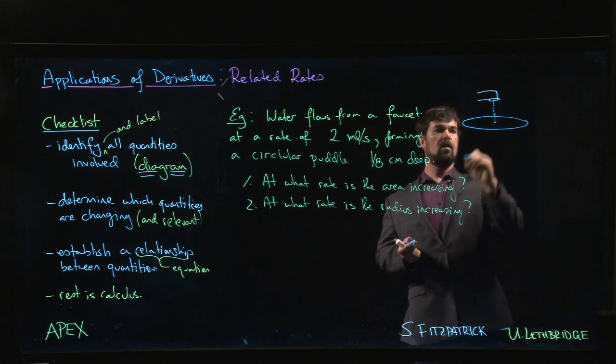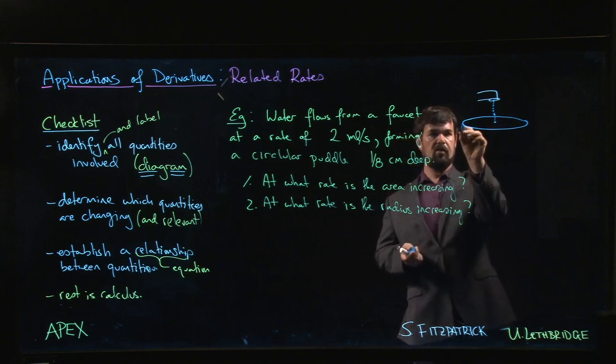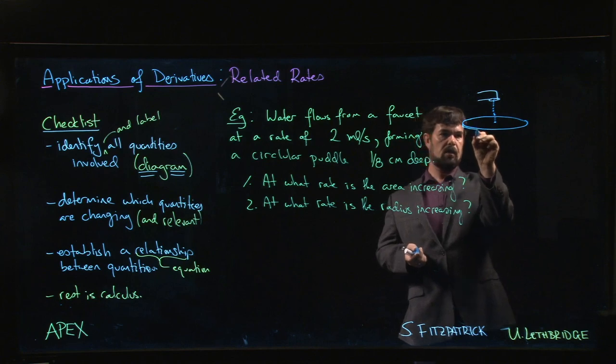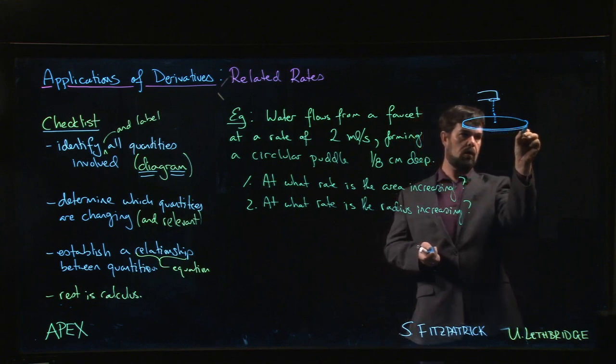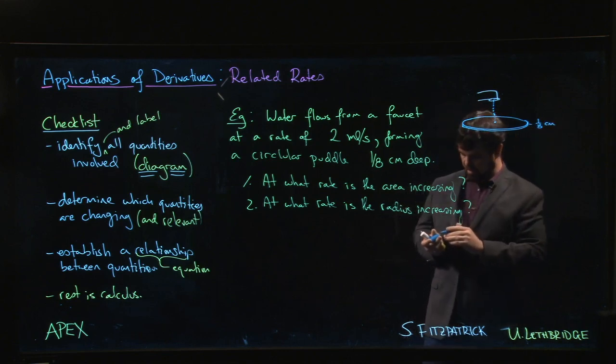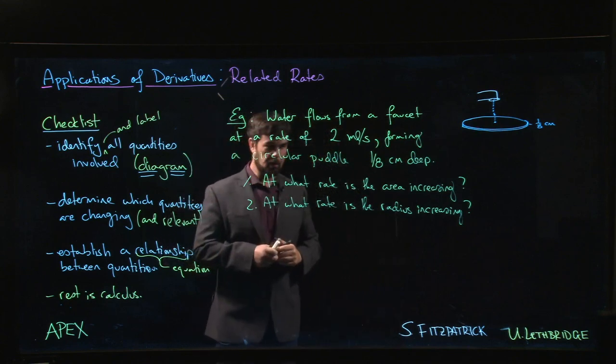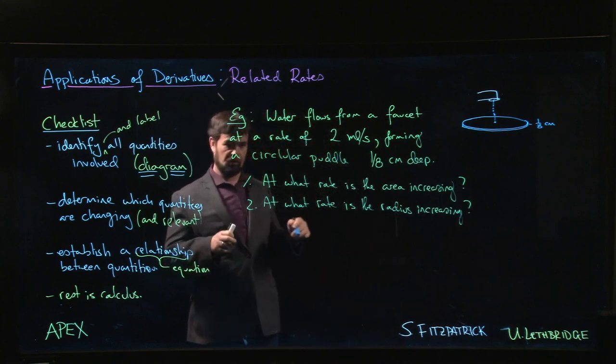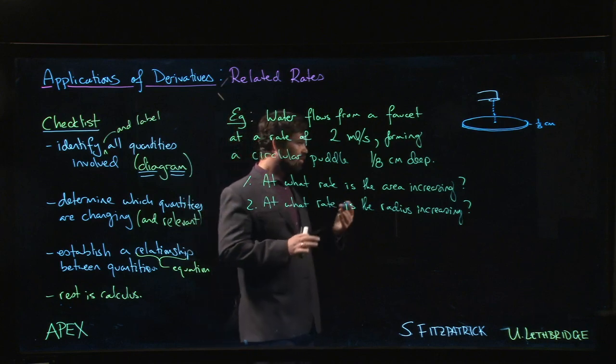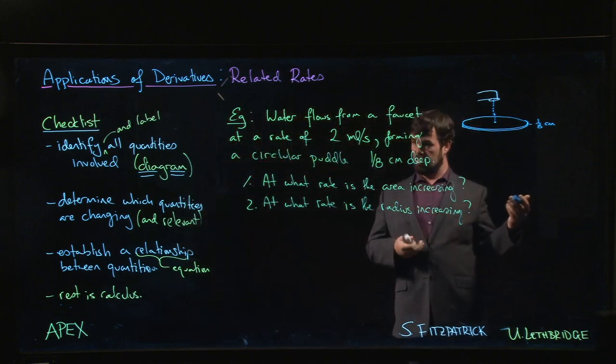The puddle perhaps implausibly remains perfectly circular and maintains this constant depth. We think of it as a disk, and we could make up some lies about surface tension or something keeping this depth at a constant value of one-eighth of a centimeter, but we'll just leave it at that.